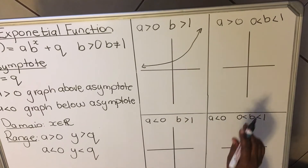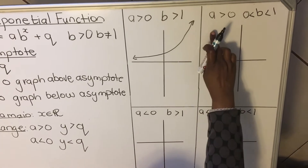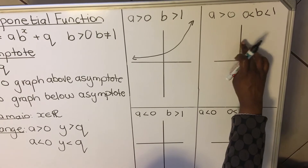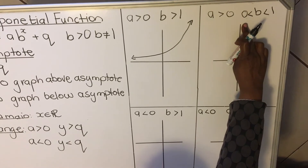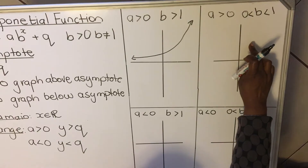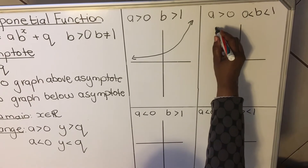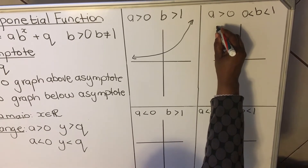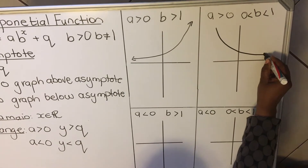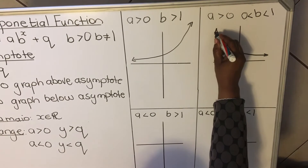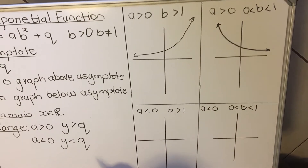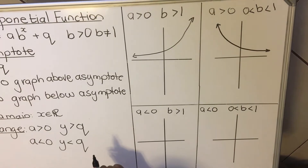The next case: when a is greater than 0, the graph is still above the asymptote, but now B is greater than 0 but less than 1, meaning B is a fraction. When B is a fraction, in the second quadrant your graph starts up and then in the first quadrant it goes towards the asymptote. You need to memorize that before you even start drawing the graph.